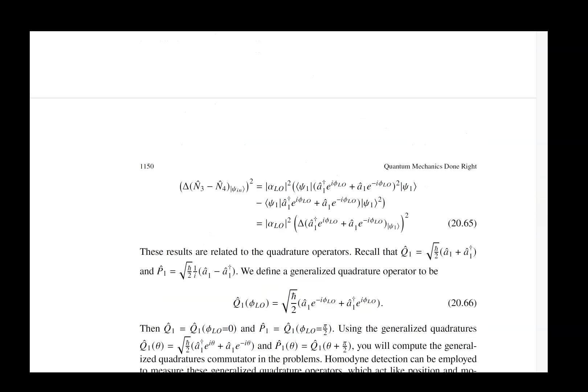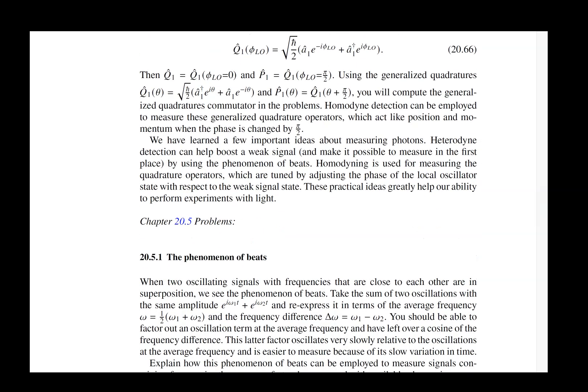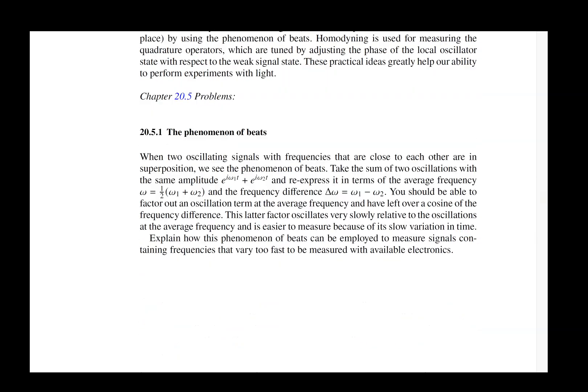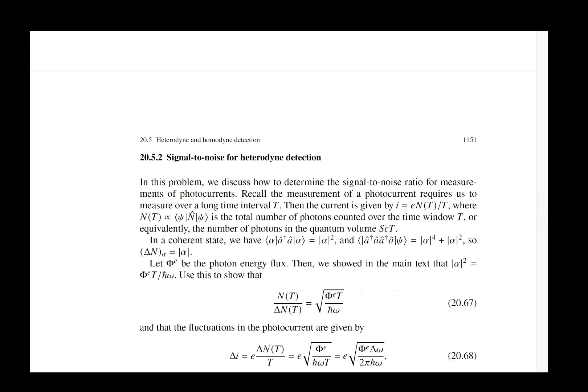The homodyne detection is essentially using the same signal, and the input into the beam splitter on one of the input channels is very high in amplitude. This helps you compensate for the dark noise of your photo detectors.